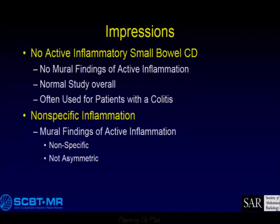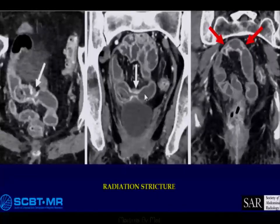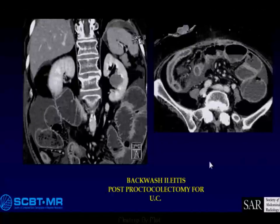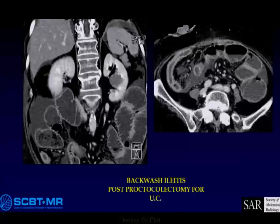I don't use nonspecific very often because most of the patients I see already have known Crohn's disease. Here are a couple of examples of nonspecific inflammatory change: this is a radiation stricture, and notice that it's pretty symmetric — not asymmetric. Here's a patient with backwash ileitis after a proctocolectomy for UC — I put this in quotes because about 15% of patients with indeterminate colitis who have a colectomy will develop Crohn's disease in the future.